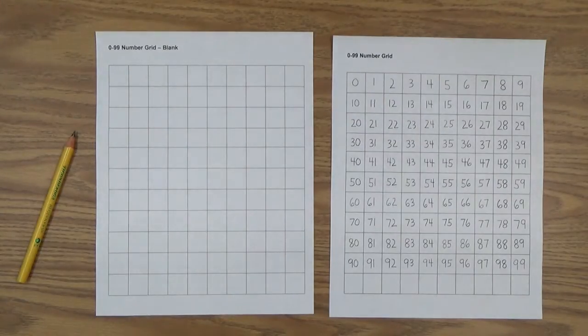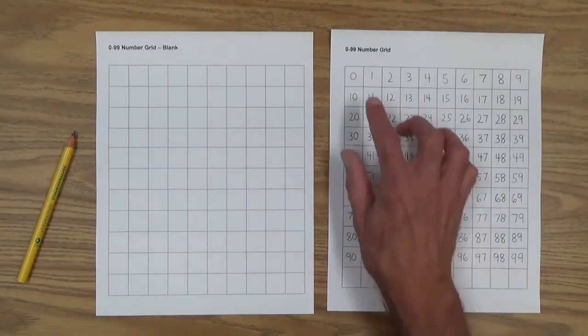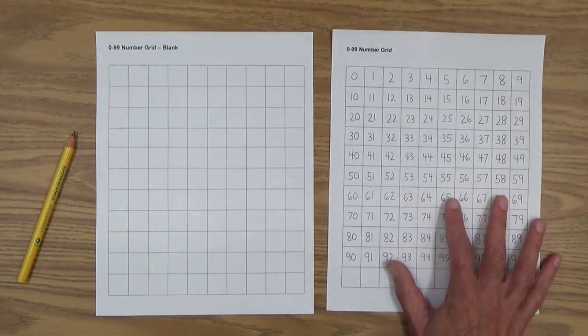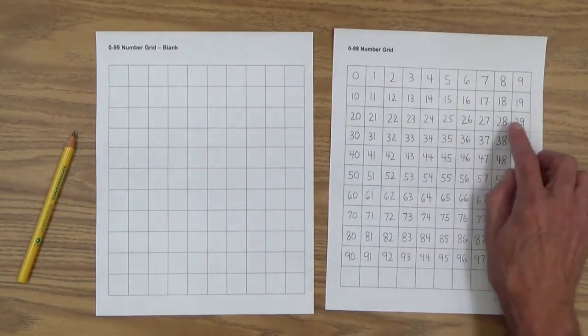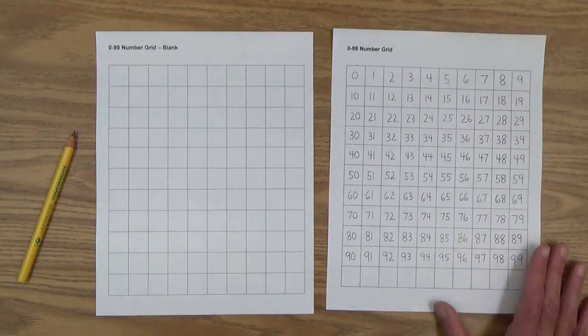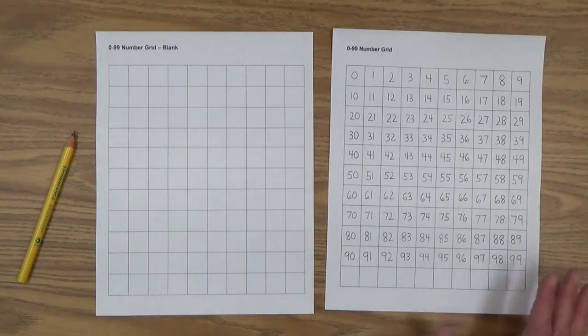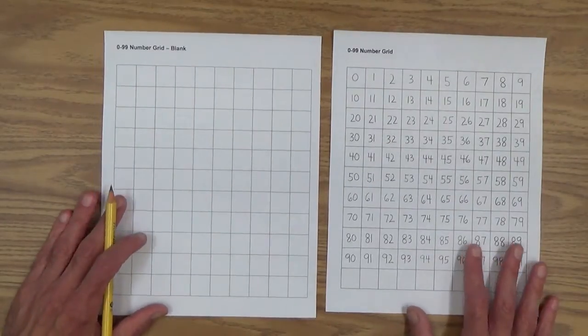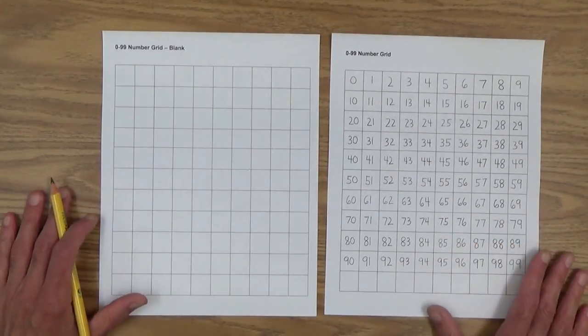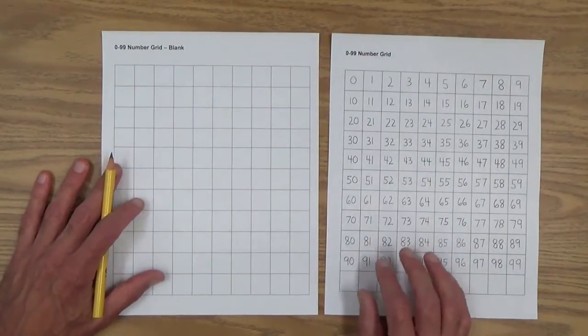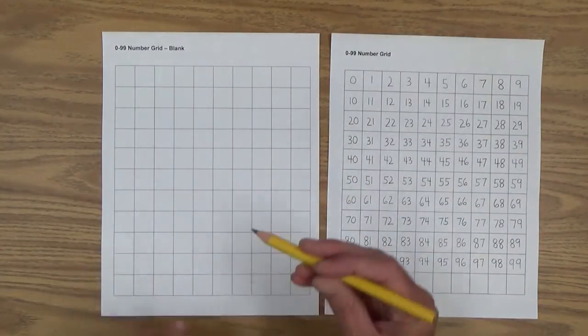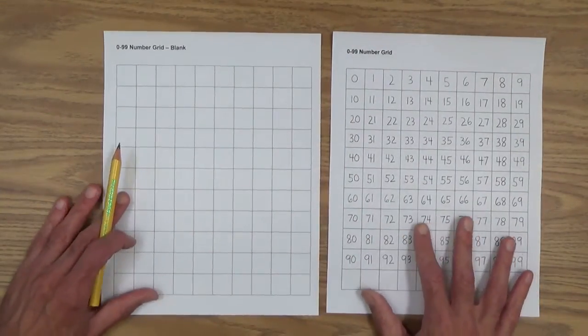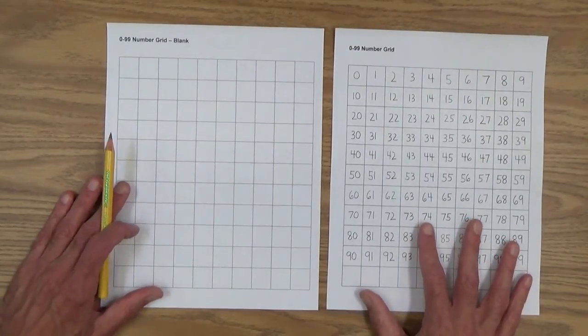There's three parts to this process. The first part is to have your child copy the 0 to 99 number grid by rows. In other words, starting at zero, moving like this through consecutive numbers all the way up to 99. You can model that activity and get her started. Your child might want this sheet up on top, or if he's right-handed, he might want it over here. So I'll leave that up to you to work that out.